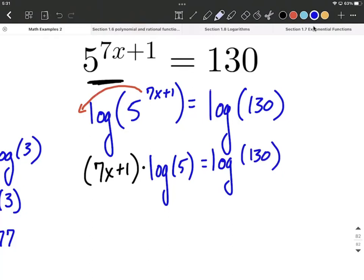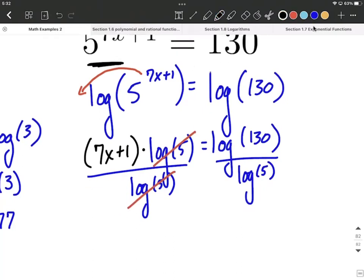From here, the step shouldn't be too bad to solve down because x is out of the exponent. Now, we could distribute the log of 5, but I'm going to say the entire side is multiplied by log of 5. It may be easier just to move that to the other side by dividing the entire side by log of 5. Multiplying and dividing by the same thing counteract each other. This will leave 7x plus 1 on the left-hand side and the entire log of 130 divided by log of 5 on the right side.